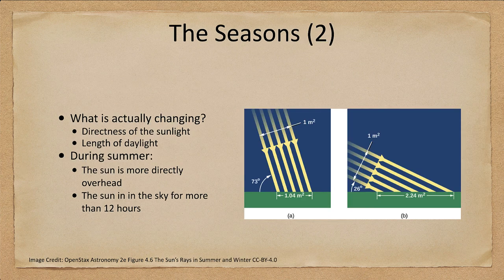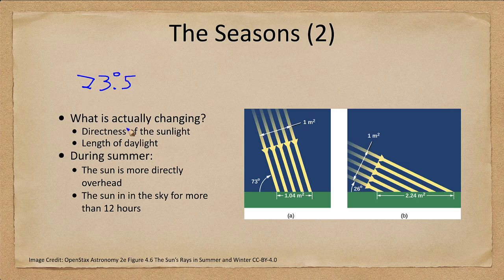So what is actually changing? We've talked about the 23 and a half degree tilt. That tilt is going to cause two things to change: one is how directly the sunlight strikes Earth, and two is the length of daylight — how long the days are.